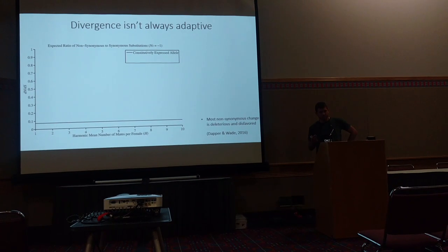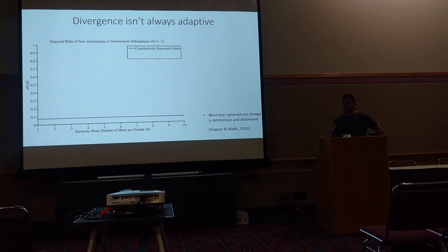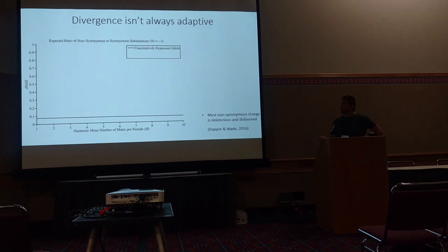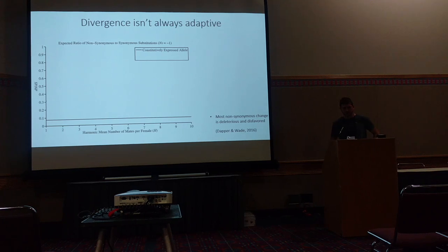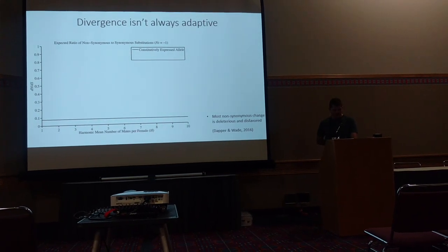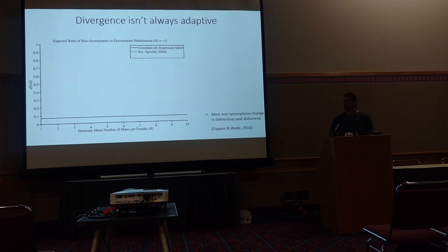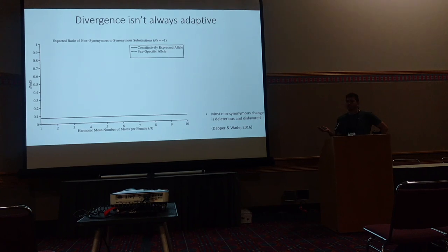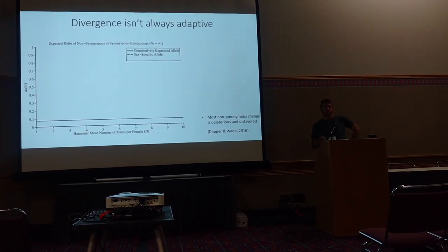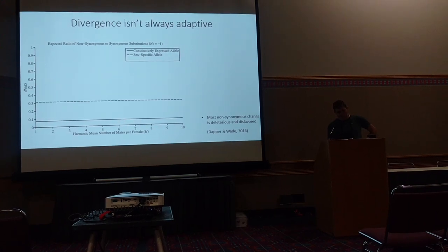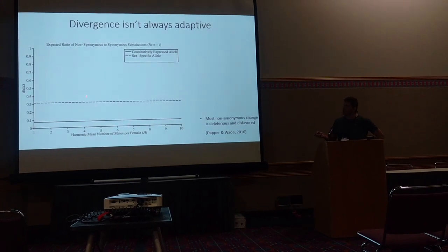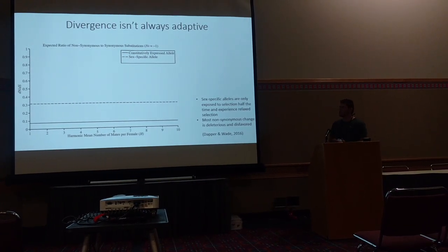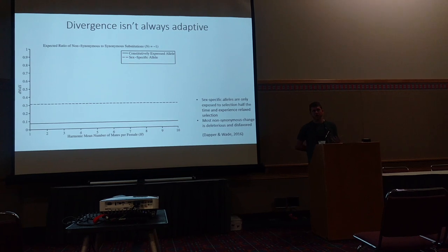As nearly neutral theorists, we're also thinking that selection's efficiency is going to depend on population size — it's stronger in large populations, and drift becomes more important in smaller populations. If we then consider things that are male-limited in expression, what you're doing is effectively halving the population size in which these alleles are exposed to selection. So we might actually see increased divergence, but rather than being due to selection, it's the opposite — a relaxation of selection and an increased role of drift.